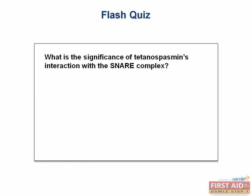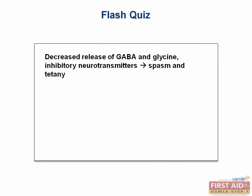Flash quiz: what is the significance of tetanospasmin's interaction with the SNARE complex? Decreased release of GABA and glycine — since these are inhibitory neurotransmitters, you'll develop tetany and spasm.